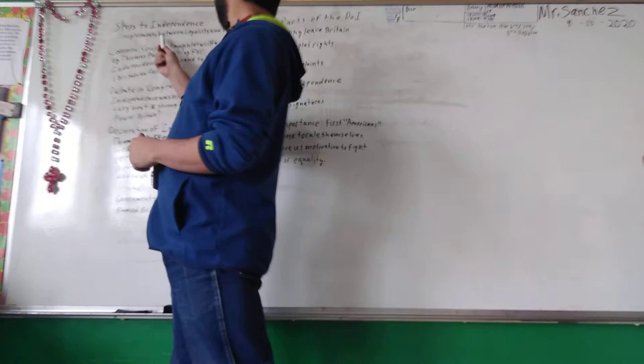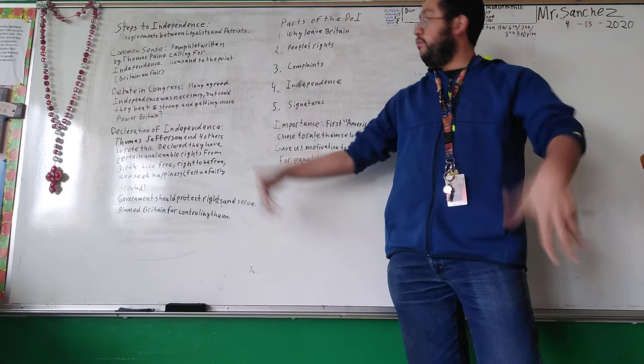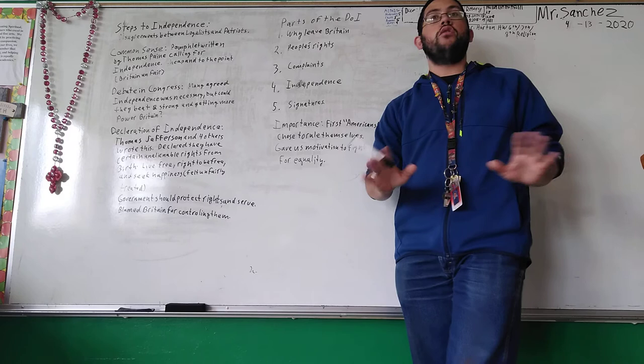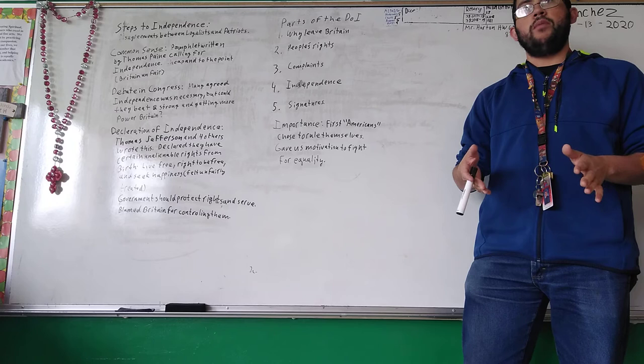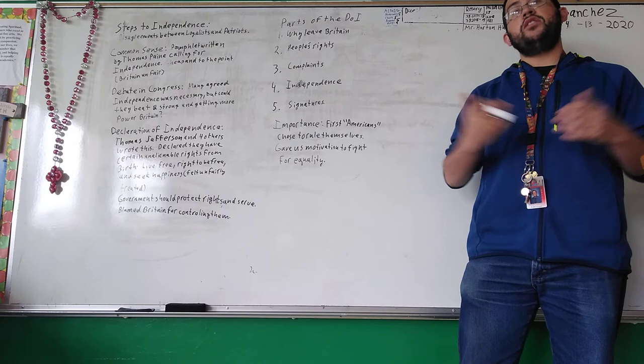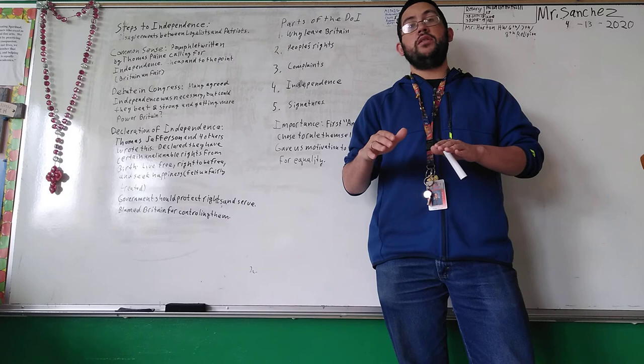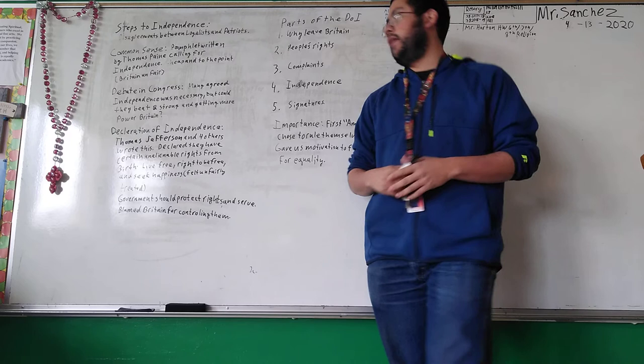We see that the Patriots here are thinking we need our independence, we need to rule ourselves. Whereas there are Loyalists who are like, no, we are still under King George III. If we just do what we're supposed to do, we won't get in trouble, we wouldn't have to worry about these taxes. So we see there's division. Whenever there's division, there's always people trying to convince you the other way. A great example is our political system right now. With the coronavirus, Republicans are going to use this pandemic to their side, and Democrats are going to use it to their side. People are going to try to get their way with certain things.